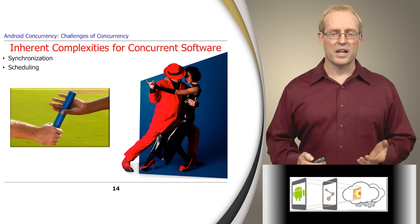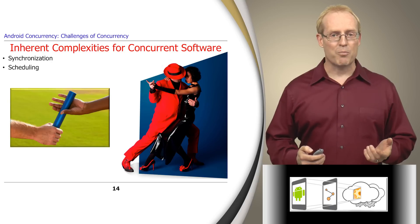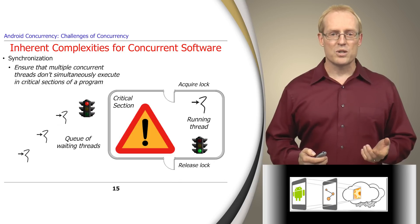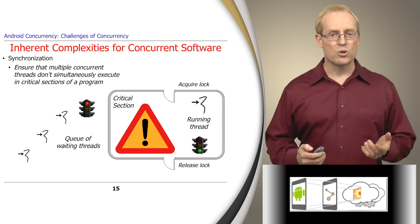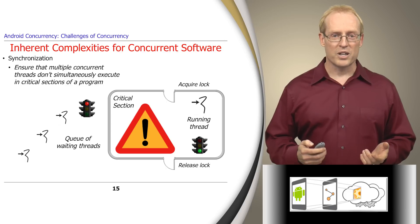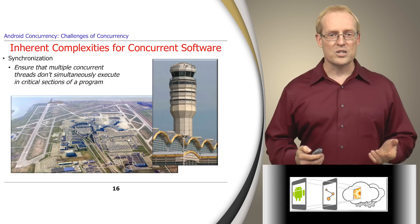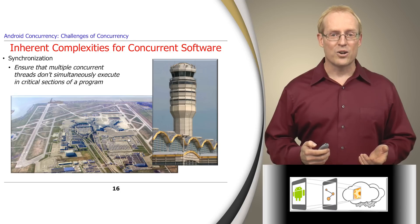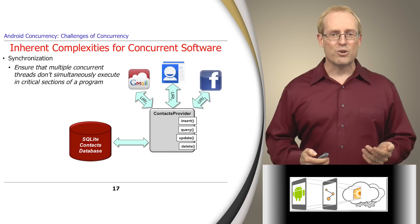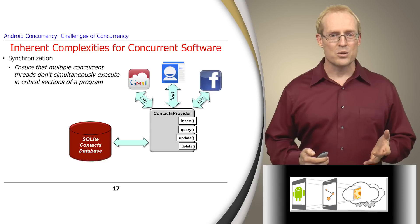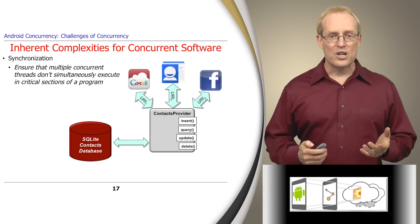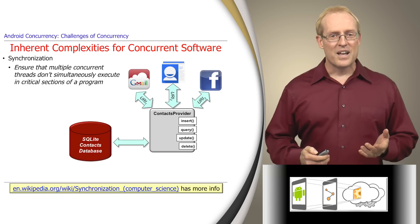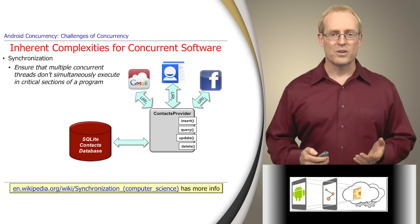Some common inherent complexities of concurrent software relate to synchronization and scheduling, which deal with the order and time in which operations are performed. Synchronization ensures that multiple concurrent threads don't execute critical sections of a program at the same time and corrupt shared resources. Synchronization also occurs in our daily lives — for example, air traffic controllers must synchronize access to a runway, a shared resource, to ensure planes don't collide on takeoff or landing. Likewise, Android needs to synchronize access to SQLite contact databases to ensure that applications running concurrently on the device don't corrupt the raw contact entities.